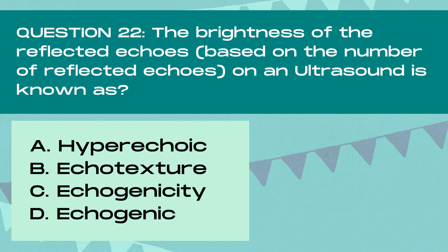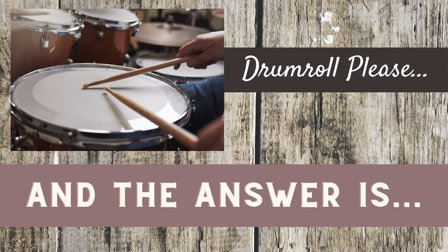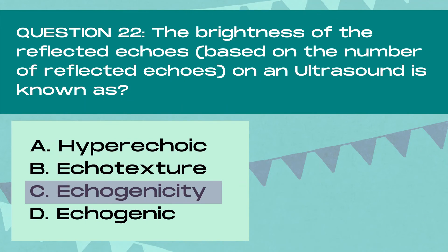Question 22. The brightness of reflected echoes based on the number of reflected echoes on an ultrasound is known as — and the answer is C. Echogenicity. The echogenicity of a mass looks at the brightness of the reflected echoes within the mass. Different echogenicities on ultrasound include hyperechoic, hypoechoic, isoechoic, anechoic, and complex.